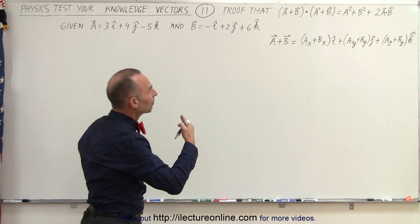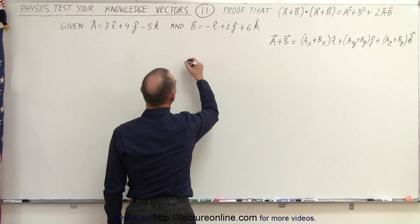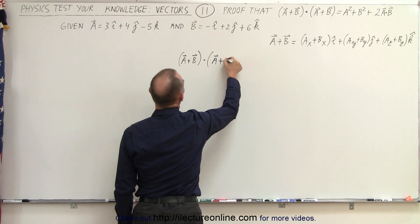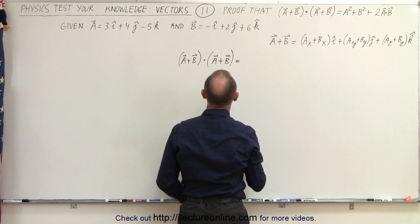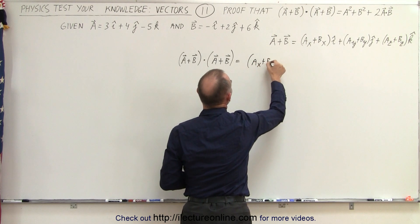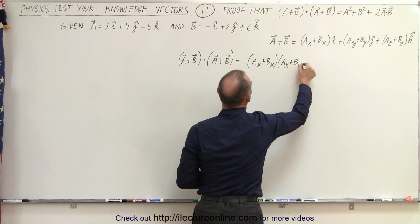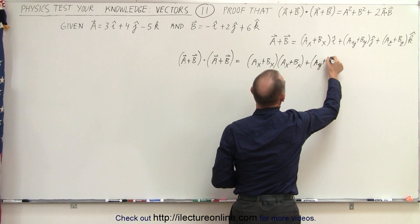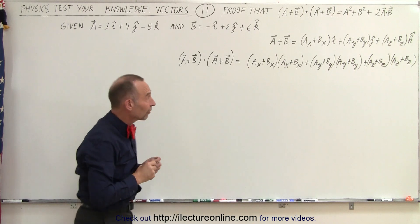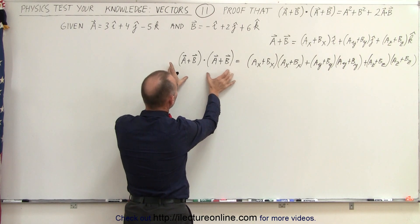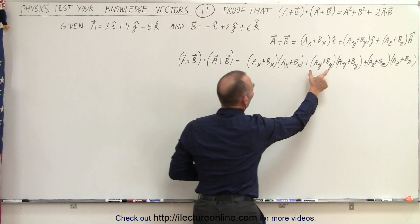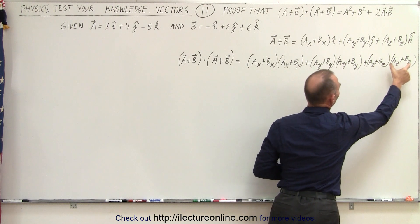So let's now find the dot product between two sums like this. We write a plus b dotted with a plus b. We should get the following result. Here we're going to multiply the x components of the two vectors, so we get (ax + bx) multiplied times (ax + bx), plus (ay + by)(ay + by), plus (az + bz)(az + bz). We simply used the definition of the dot product: the x component of the first times the x component of the second, the y component of the first times the y component of the second, plus the z component of the first times the z component of the second.